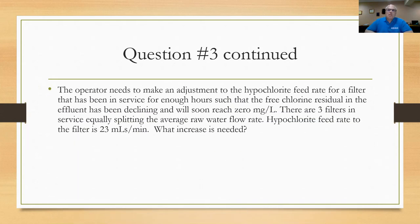So here's the question: The operator needs to make an adjustment to the hypochlorite feed rate for a filter that has been in service for enough hours such that the free chlorine residual in the effluent has been declining and will soon reach zero milligrams per liter. Now there's three filters in service, all equally splitting the average raw water flow rate. One of them has been in service a lot longer than the other. The hypochlorite feed rate to the filter is 23 milliliters per minute. What increase is needed?